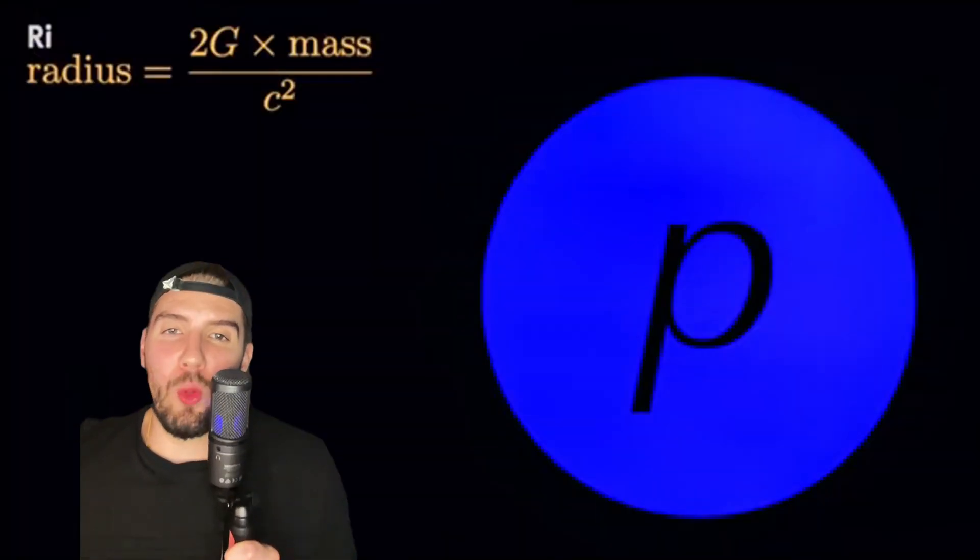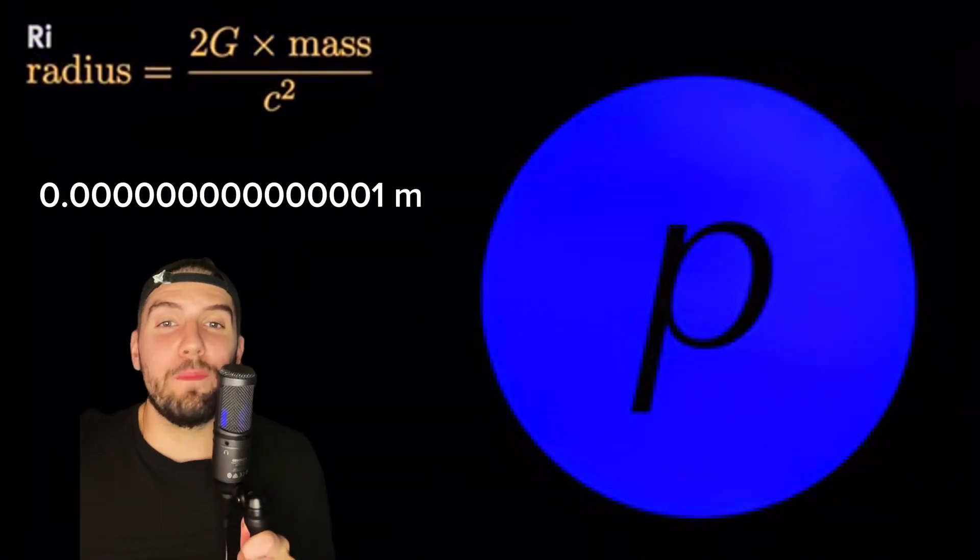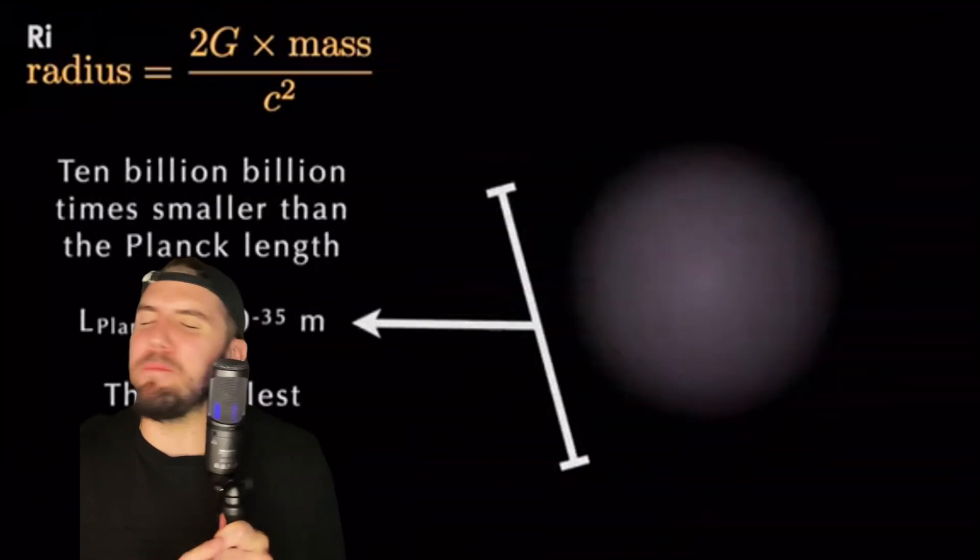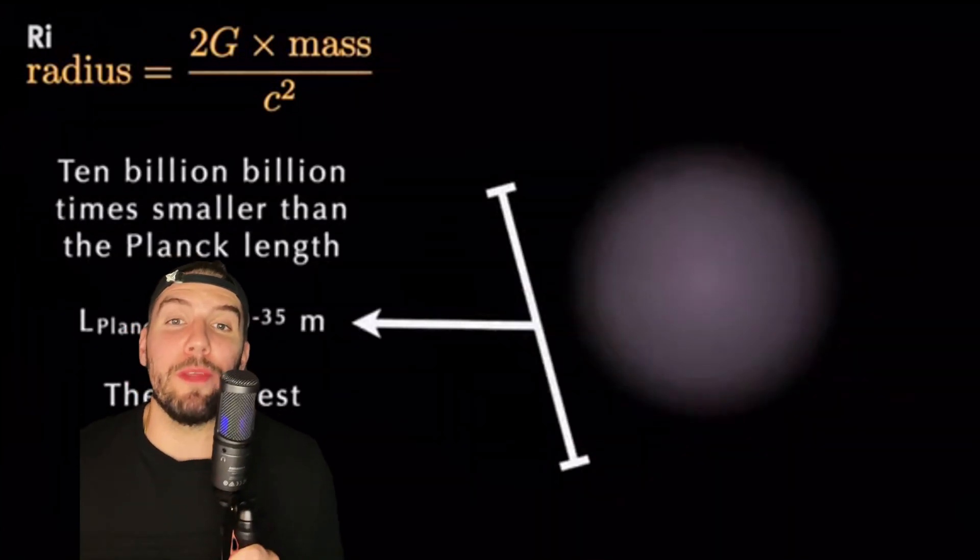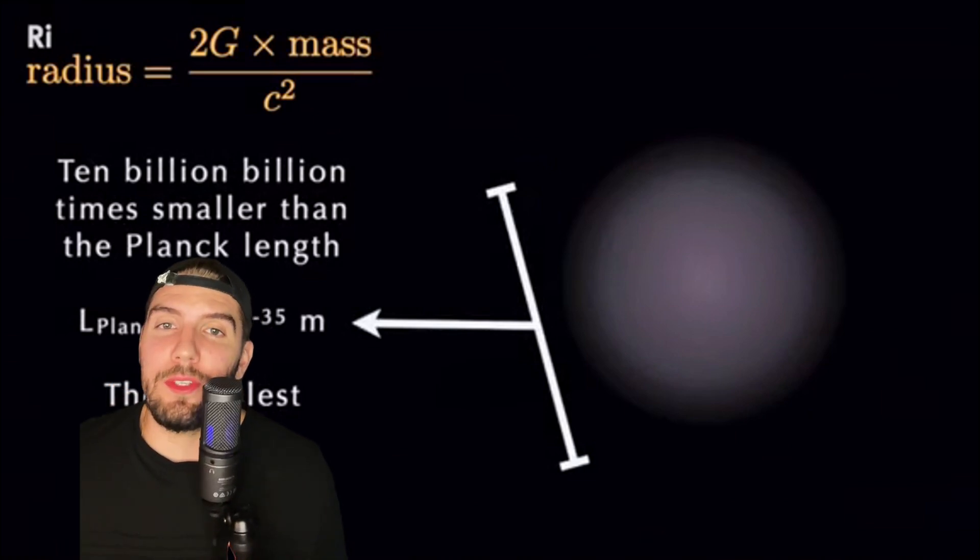And we can apply this equation to anything. Let's say we wanted to make a black hole out of a proton, which is already insanely small, about this many meters in diameter. Well, then we'd have to pack it into a volume that's about 10 billion billion times smaller than the Planck length, which is the smallest possible length that physics allows. So a proton is safe. We can't make a black hole out of one.